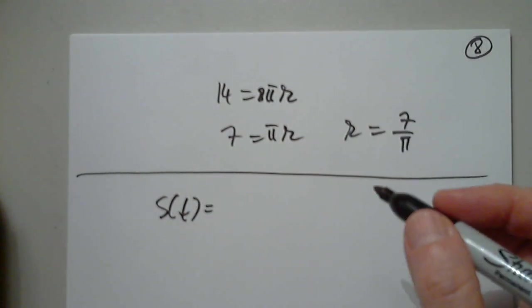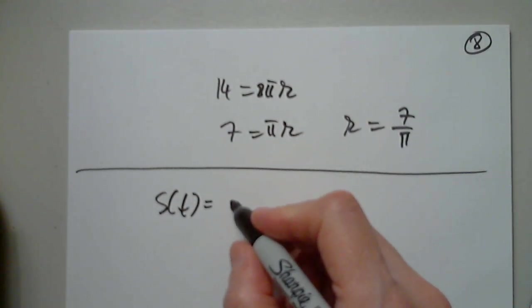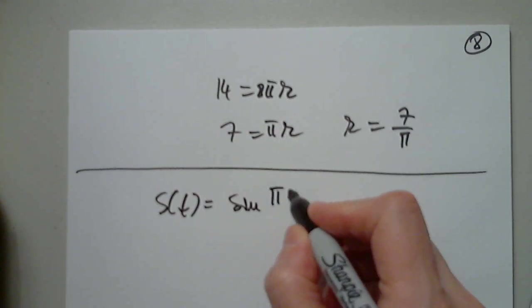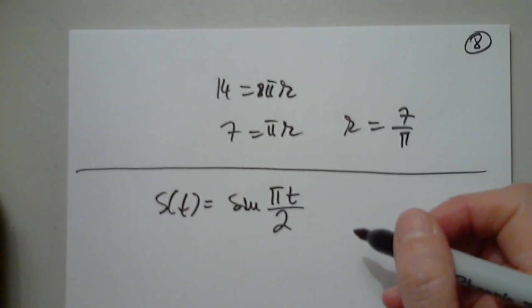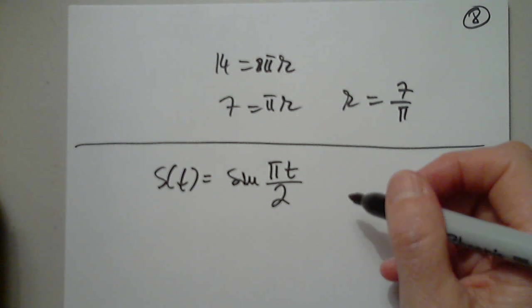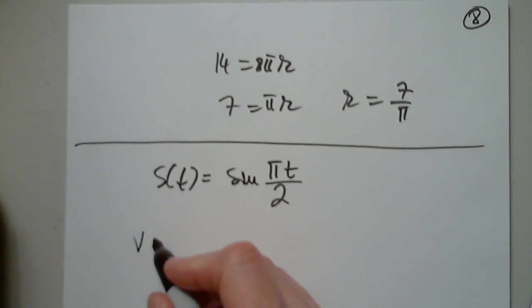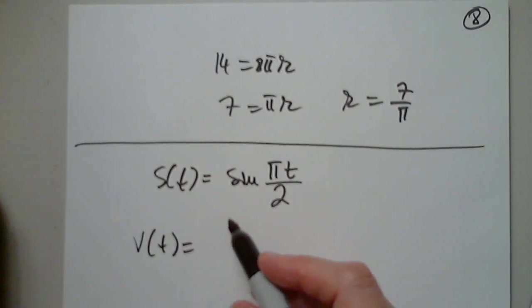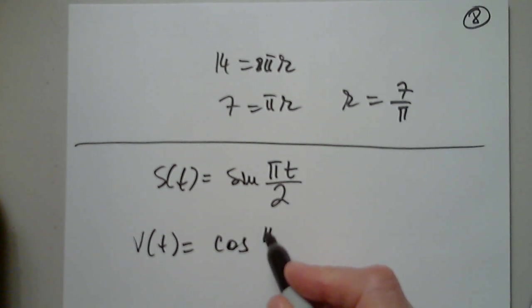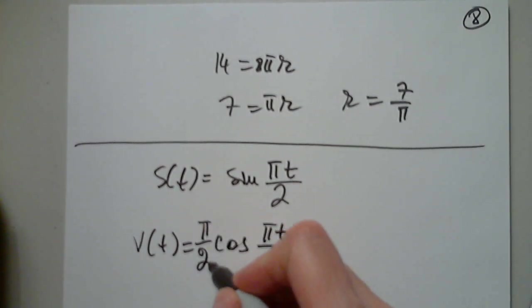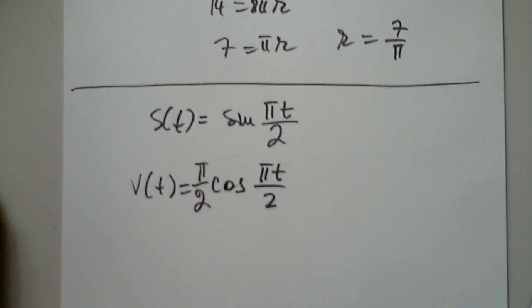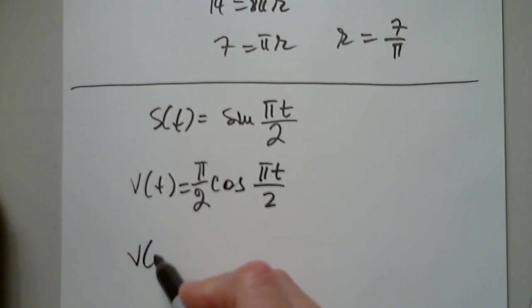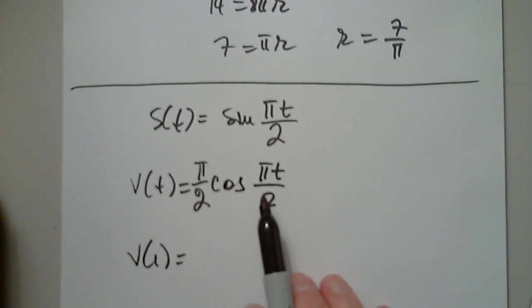S of t equals sine pi t over 2. So it says define the velocity, which I did and got correct. V of t equals cosine pi t over 2 times pi over 2. And then what is the velocity after one second? I got zero and got that correct.